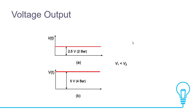Voltage output — how pressure is converted into voltage. For example, if a pressure transducer measures 2 bar, it is converted into 2.5 volts. Similarly, if 4 bar is converted into 5 volts. You can see this in the graph, where V1 is less than V2.